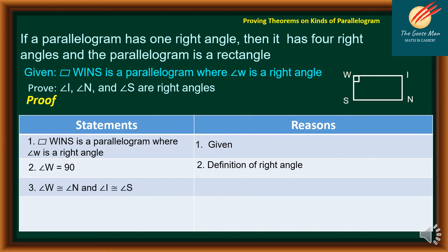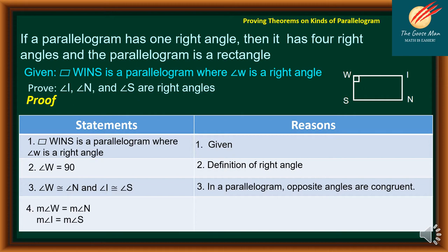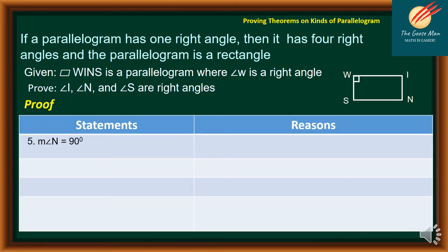Statement 3: angle W is congruent to angle N, and angle I is congruent to angle S — reason: in a parallelogram, opposite angles are congruent. Statement 4: measure of angle W equals measure of angle N, and measure of angle I equals measure of angle S — reason: definition of congruent angles. Statement 5: measure of angle N equals 90 degrees — reason: substitution using statements 2 and 4.